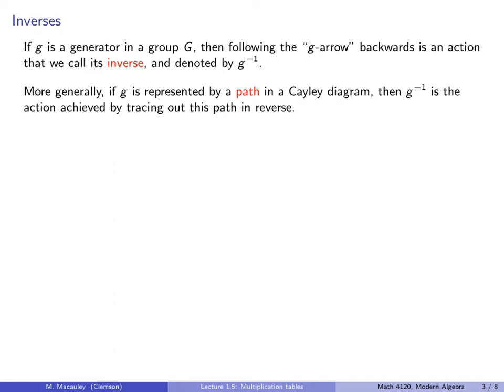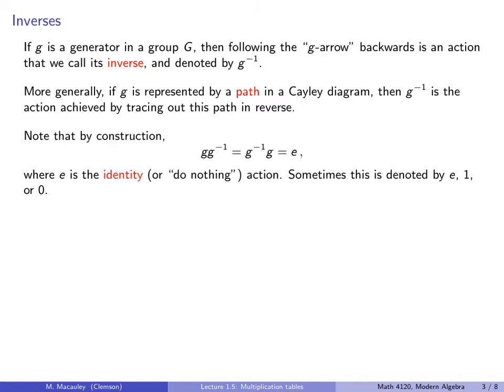More generally, if g is represented by a path in a Cayley diagram, then g^-1 is the action achieved by tracing out this path in reverse. Note that by construction, g times g^-1 is the same thing as g^-1 times g, which is the identity. It doesn't matter which order you do g and g^-1 in, they cancel each other out.